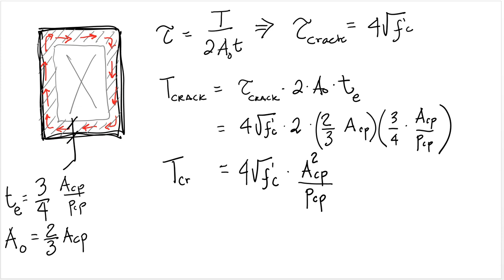So basically what the ACI does is it neglects all of the concrete in the core of the section. So it neglects all the contributions coming from the core of the cross section, and it only accounts for the contributions on the thickness around the perimeter. That thickness is selected as 3/4 of the enclosed area by the perimeter of the cross section divided by the perimeter of the cross section. This works out as a thickness because this is area divided by length, so you get a thickness.